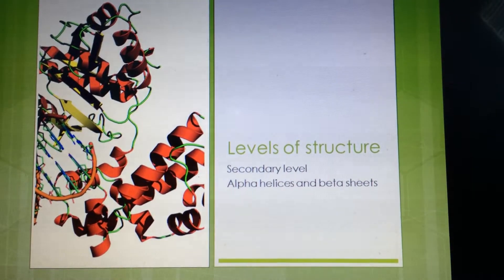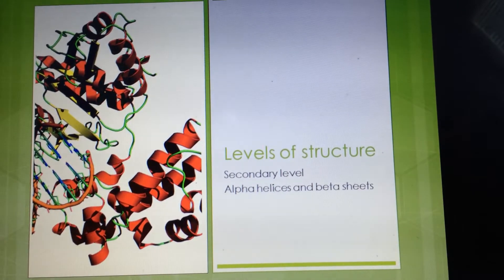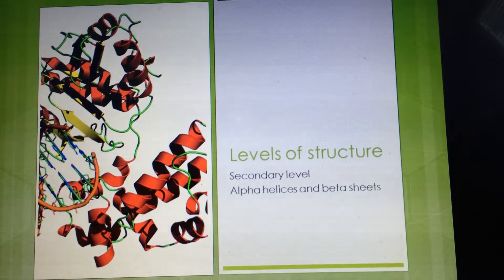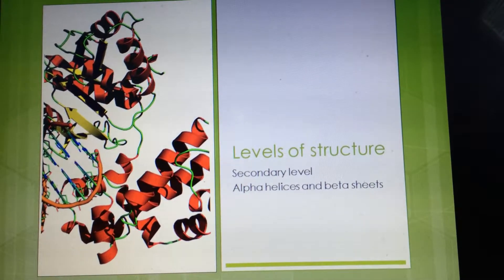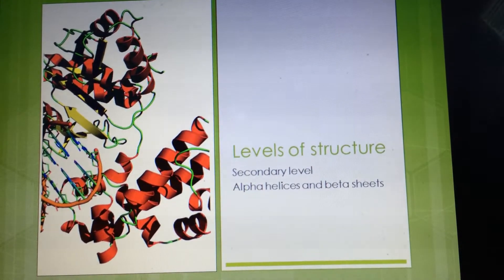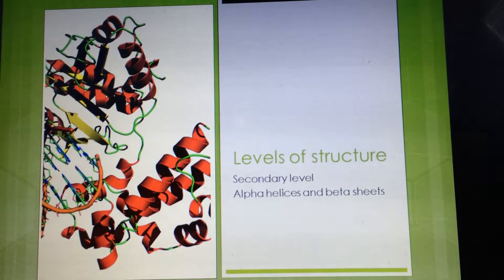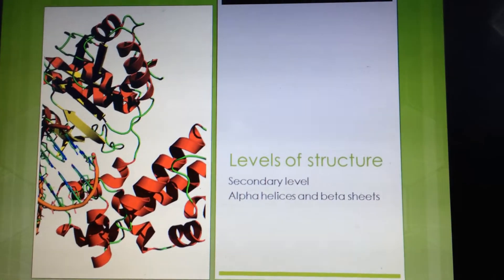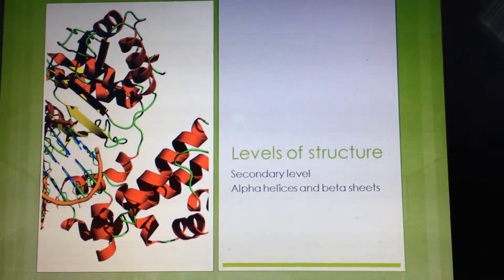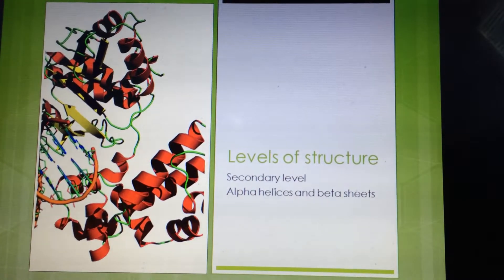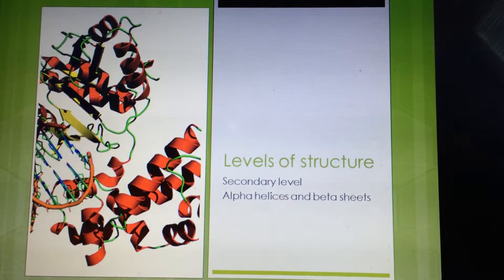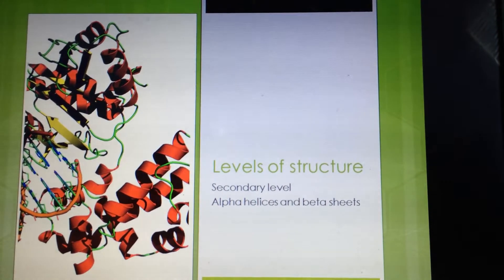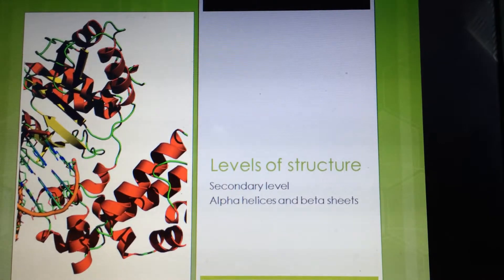The secondary level of structure shows alpha helices and beta sheets. There are usually two very long alpha helices, and these alpha helices form coiled coils. Additionally, you'll see two interlocking anti-parallel beta sheets in each domain. So in each domain, you will see two very long coiled-coil alpha helices and also two interlocking beta sheets.